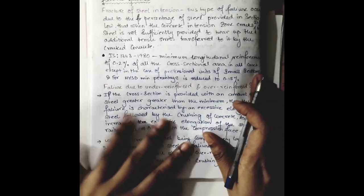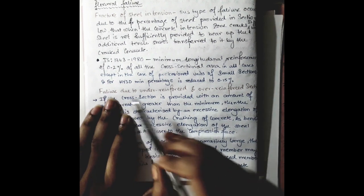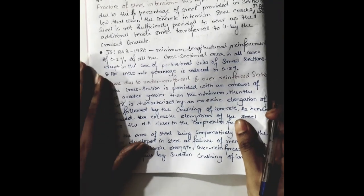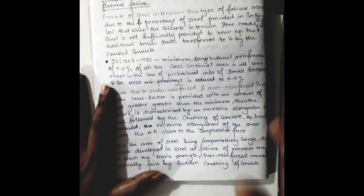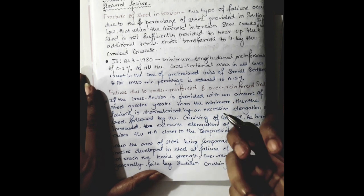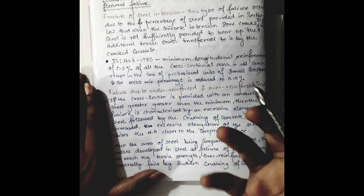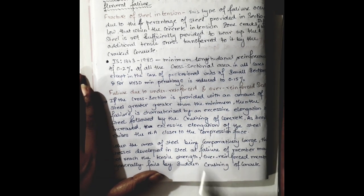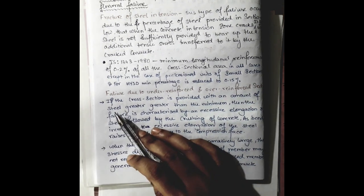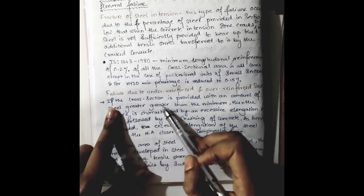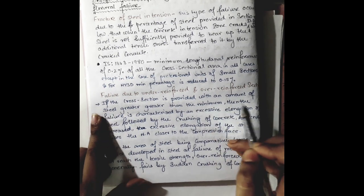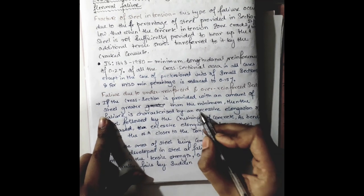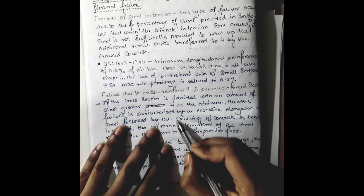Next comes the failure due to the under-reinforced and over-reinforced section. You already have some idea about under-reinforced and over-reinforced concrete, so in a similar way we can describe the failure pattern of the pre-stressed beam as well.